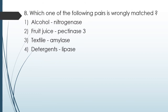Question No. 69: Which one of the following is wrongly matched? Options: Alcohol–Nitrogenase, Fruit Juice–Pectinase, Textile–Amylase, Detergent–Lipases. The correct answer is Option 1 is wrongly matched — Alcohol is not associated with Nitrogenase.